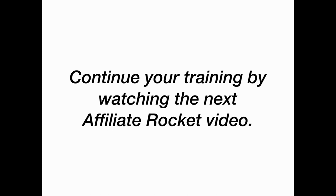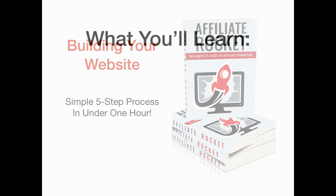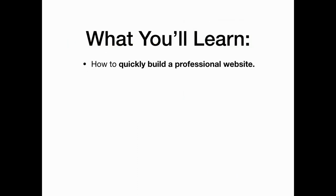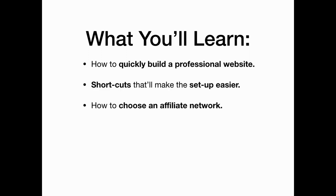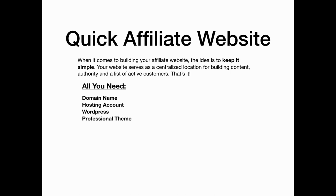Continue your training by watching the next Affiliate Rocket video: building your affiliate website — a simple five-step process in under one hour. You'll learn how to quickly build a professional affiliate website, shortcuts that'll make the setup easier, and how to choose an affiliate network. When it comes to building your affiliate website, the idea is to keep it simple. Your website serves as a centralized location for building content, authority, and a list of active customers. All you need is a domain name, hosting account, WordPress, and a professional WordPress theme, then incorporate a mailing list account and content.